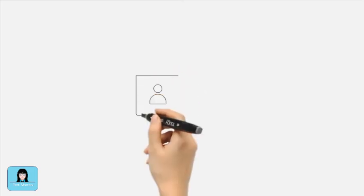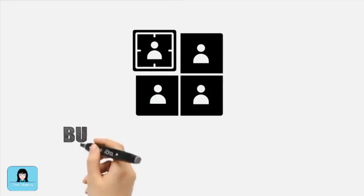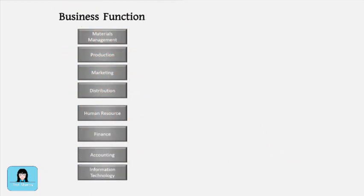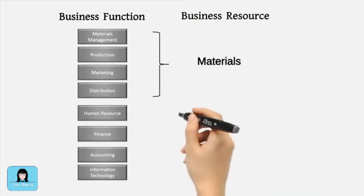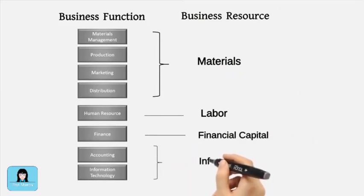A common method of structuring an organization that is of relevance to AIS is called business segmentation. Business segmentation is the process of dividing the organization into functional units. This structure groups employees into functional areas based on their expertise. Each business function focuses on a particular business resource of the organization. Each business resource has various relevant data that are captured, processed, stored, and distributed as information to different interested users.